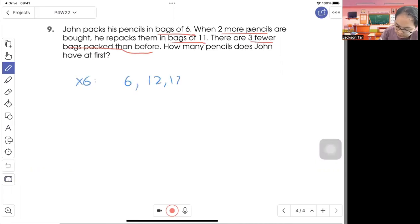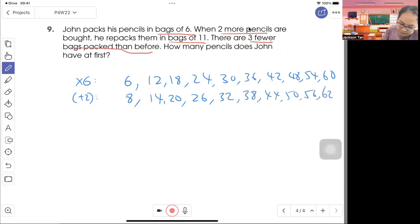So in bags of 6, so possible answer may be 6 pencils, 12, 18, 24, normally we list all the way until 60. Then multiples of 6, then we stop and see first. So two more pencils, so plus another two, there'll be 8, 14, 20, 26, 32, 38, 44, 50, 56, 62. Then if here mentioned bags of 11, so 11, 22, 33, 44 and we stop here we got 44.